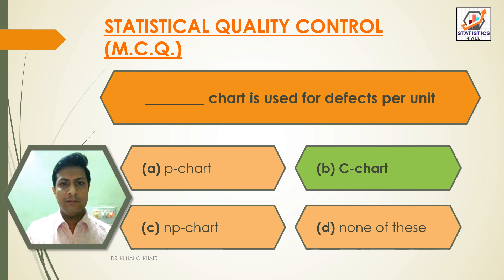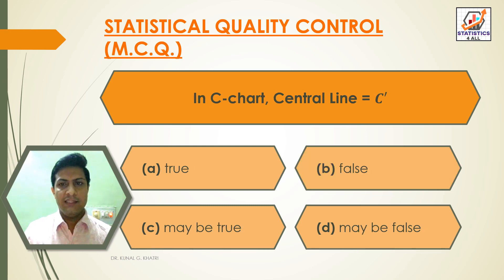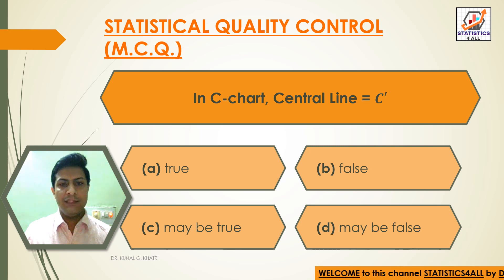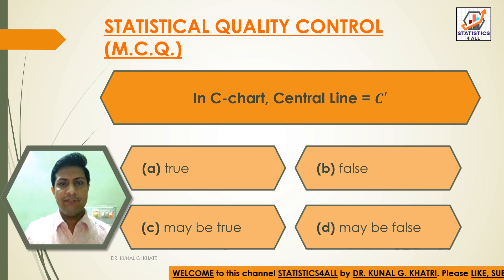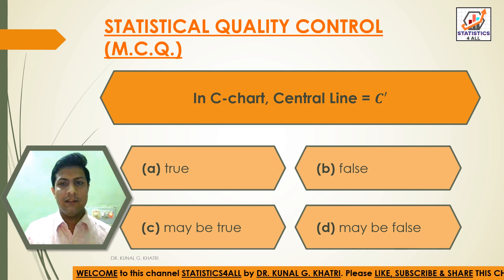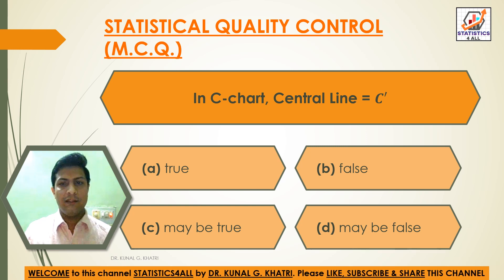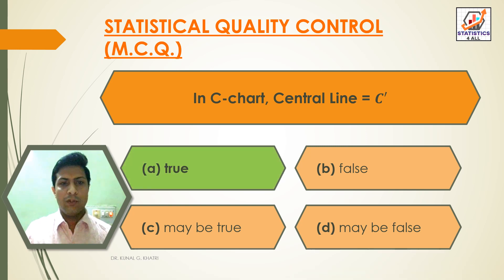Next question: in C chart, center line is equal to C dash. Option A: true, Option B: false, Option C: may be true, Option D: may be false. Answer: Option A — true. In C chart, center line is equal to C dash.